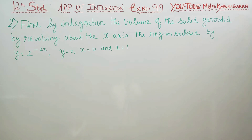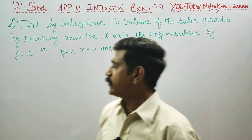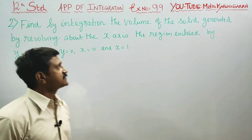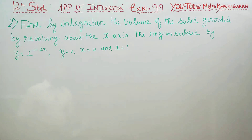Dear 12th standard students, this is exercise number 9.9. Find by integration the volume of the solid generated by revolving about the x-axis the region enclosed by y = e^(−x), y = 0, x = 0, and x = 1.